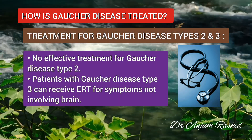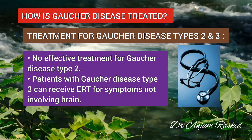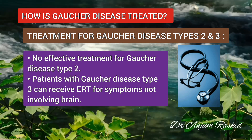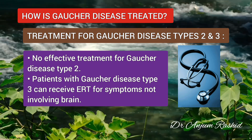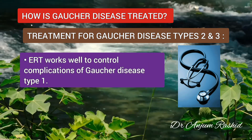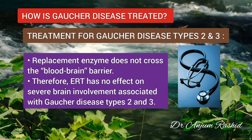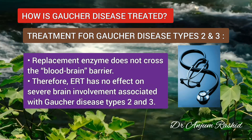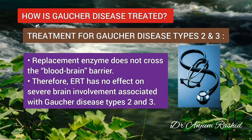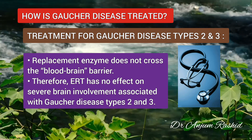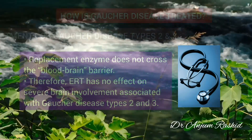There is currently no effective treatment for Gaucher disease type 2. Patients with type 3 can receive enzyme replacement therapy to address symptoms not involving the brain, such as organ involvement and bone issues. ERT works well to control complications most commonly occurring in type 1 patients. However, the replacement therapy does not cross the blood-brain barrier, which acts to protect the brain but also filters out medications. Therefore, enzyme replacement has little to no effect on the severe brain involvement associated with Gaucher disease type 2 and 3.